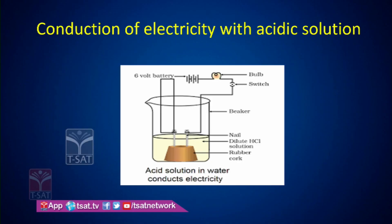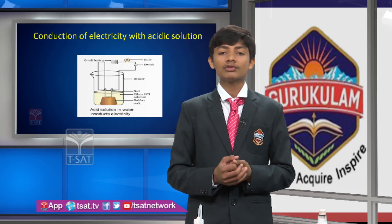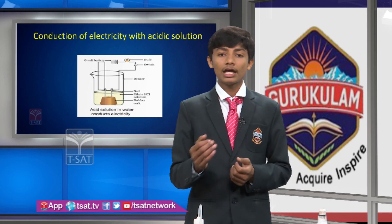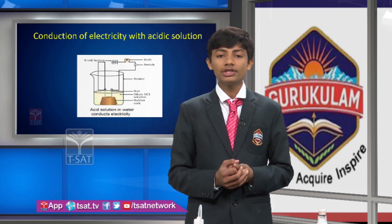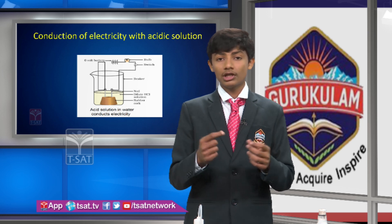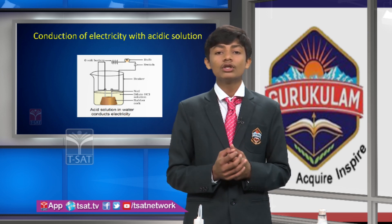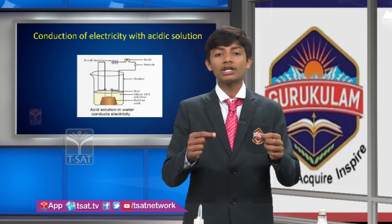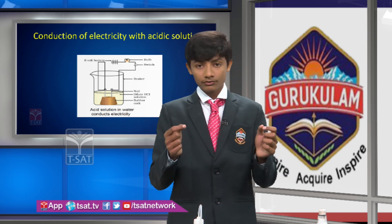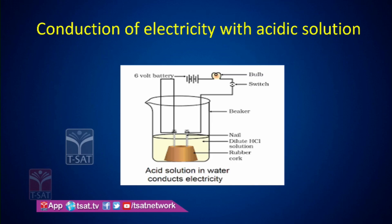Now I explain conduction of electricity with acidic solution. We can conduct electricity using an acidic solution, and even prepare a battery with it. For this, we take a beaker and add hydrochloric acid, then connect a circuit with graphite electrodes dipped in the acid. The bulb automatically lights on, showing that acidic solution conducts electricity.